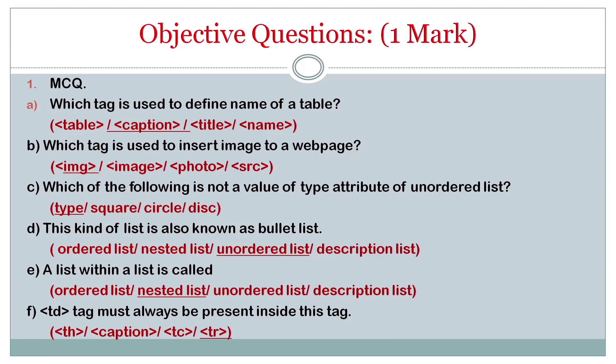Which tag is used to insert image to a webpage? It will be image, IMG. Which of the following is not a value of type attribute of unordered list? It is type. This kind of list is also known as bullet list, it is unordered list. A list within a list is called nested list.